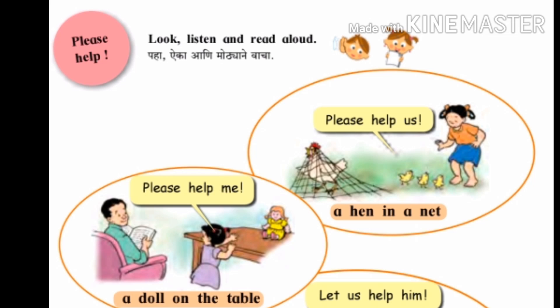In the second picture: please help me — a doll on the table. You can see in the next picture, there is a doll on the table and that girl is unable to reach the doll. That's why she is asking for help, looking towards her father and saying please help me.